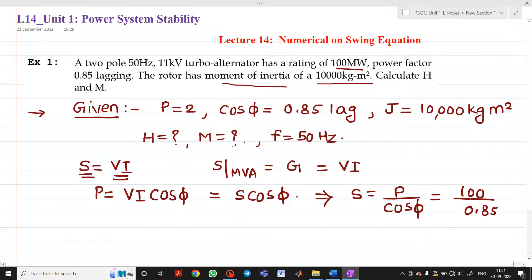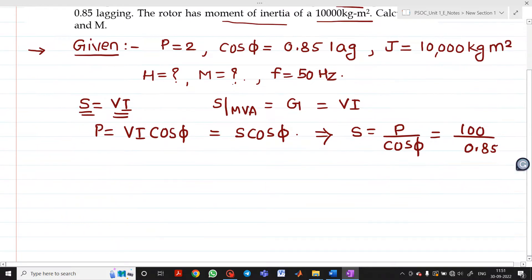If we do this calculation, S equals 100 divided by 0.85. We will get the answer as S or G, the rating of the machine, equal to 117.65 MVA.